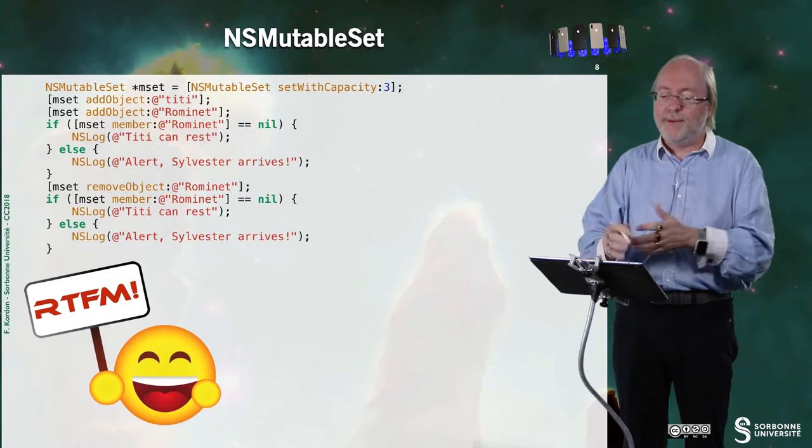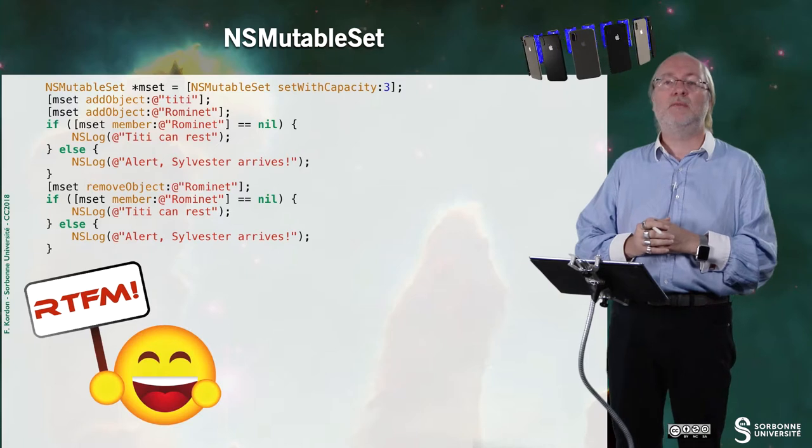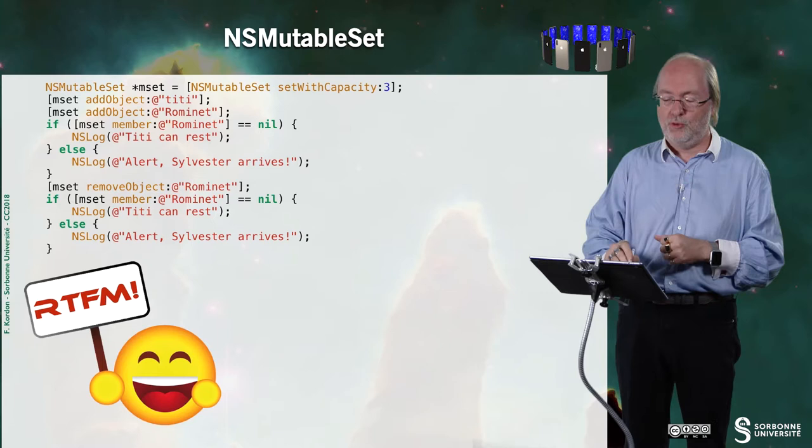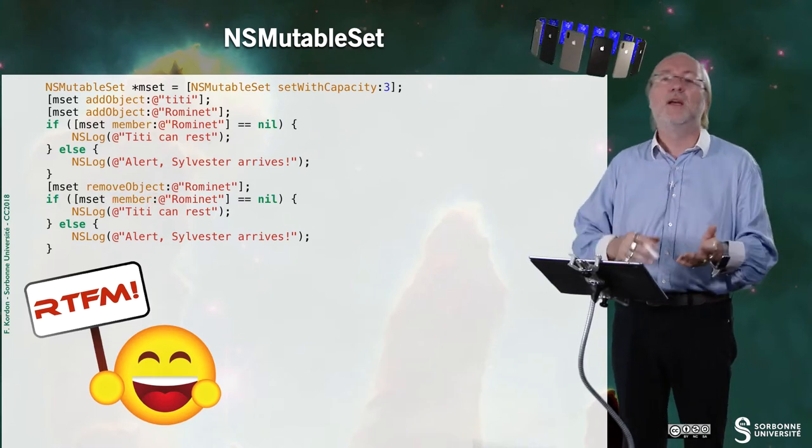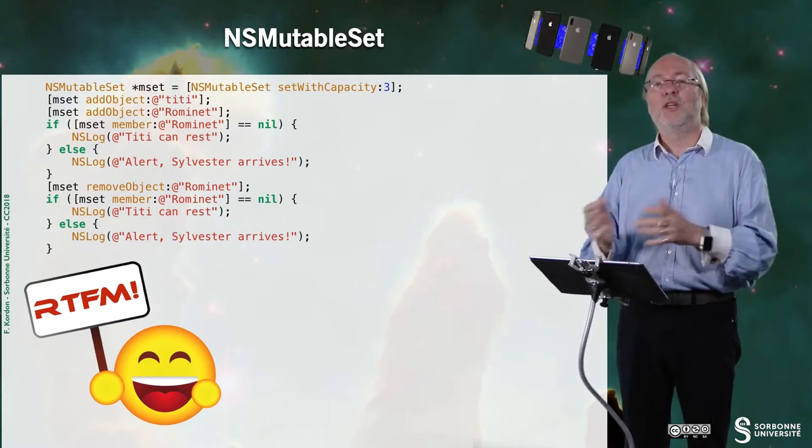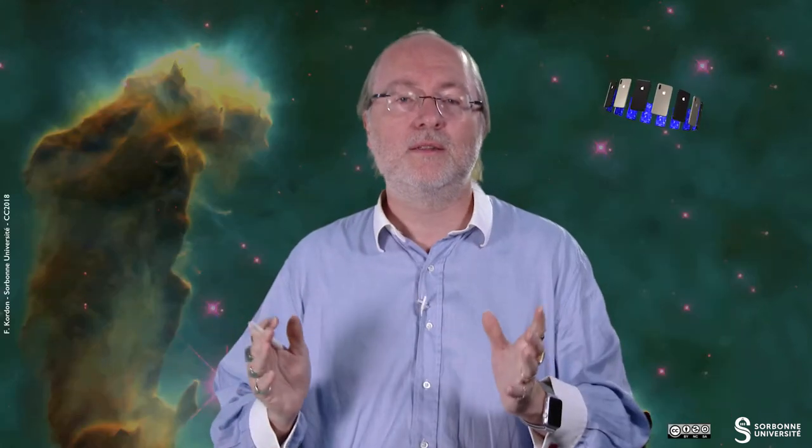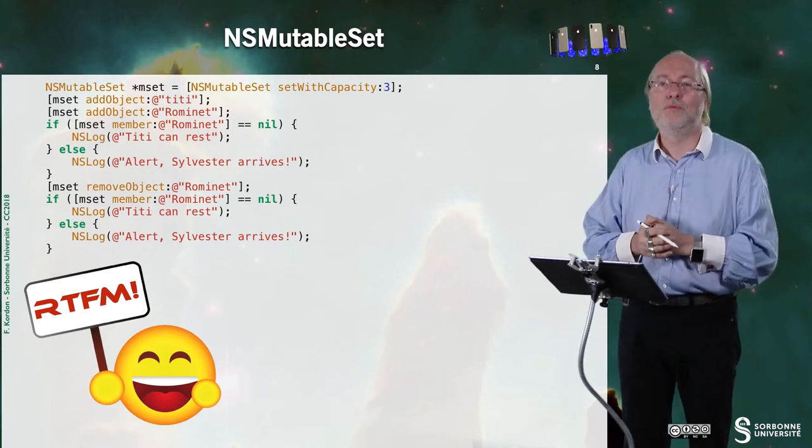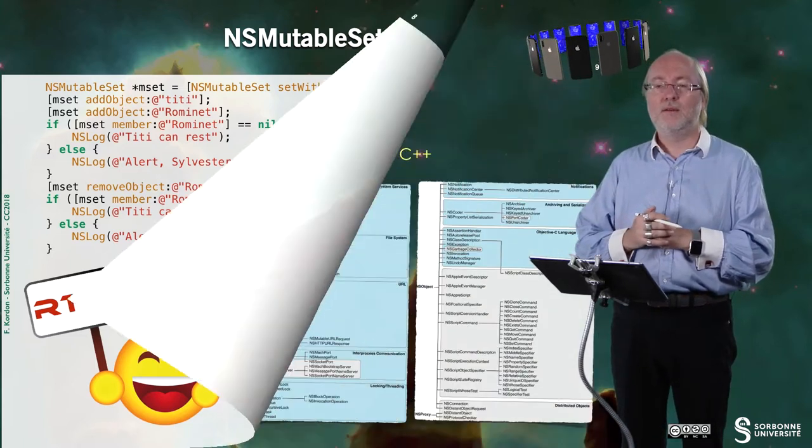And finally, NSMutableSet. Okay? So it's quite the same. Here I have setWithCapacity. I can provide maximum capacity on my set. I can have an add object. So dynamically, I can add objects. I can also remove objects. I can still check for the membership of a given object. And here and here, of course, the test will not provide the same result. Once again, everything you want to know about these NSSets and NSMutableSets are located in the fantastic manual.